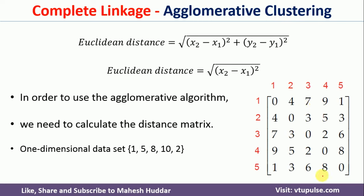Looking at this matrix, the minimum distance is between data points 1 and 5 (the data values 1 and 2, which are 1 unit apart). Because points 1 and 5 have the minimum distance, we club them into one cluster, and the distance at this merge is 1.